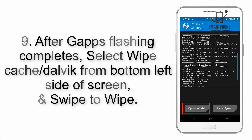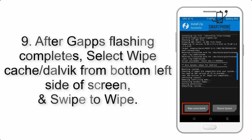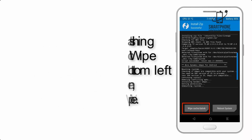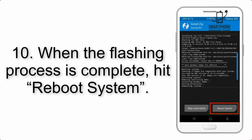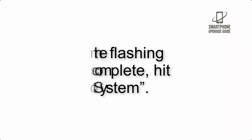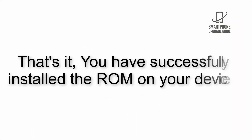Step 8: Flash the GApps zip package in the same manner. Step 9: After GApps flashing completes, select Wipe Cache and Dalvik from the bottom left side of the screen and swipe to wipe. Step 10: When the flashing process is complete, hit Reboot System. That's it — you have successfully installed the ROM on your device.